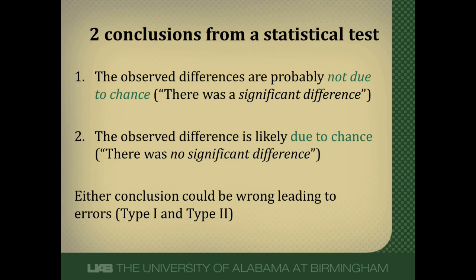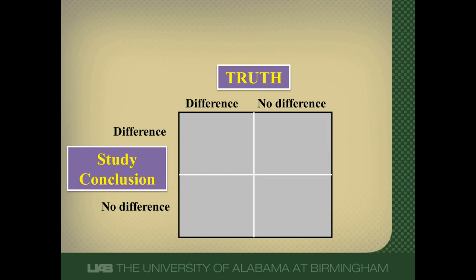Either of these two conclusions could be wrong, leading to a variety of errors — type 1 and type 2 errors. This figure tries to show that there is some higher being out there that knows the truth: that the two arms of our study — our new drug — is either different or it's not different from placebo. We do a study to try to estimate the truth, because we can never really know the truth unless we studied every single person with that disease, and that's almost impossible. Our study could say that a difference exists between our new drug and placebo, or that there is no difference.